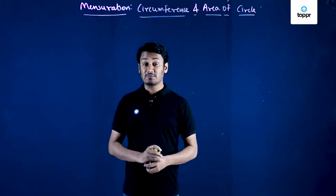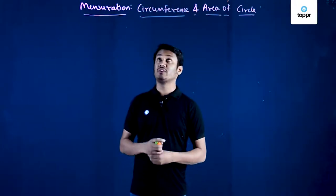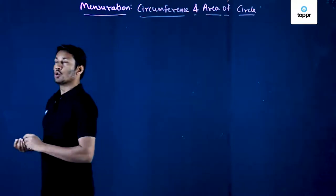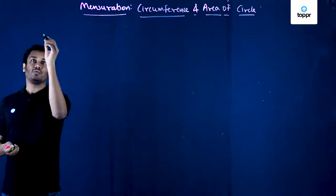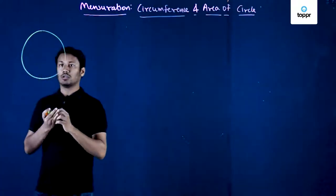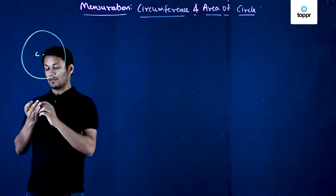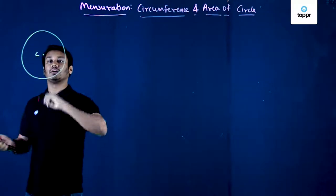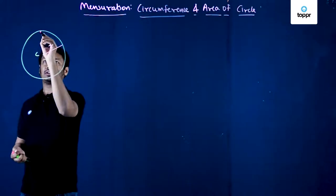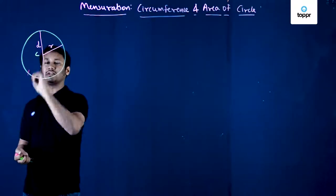Hello students. In this video lecture of chapter mensuration, we will talk about circumference and area of circle. We will first consider a circle with center C, radius R, and diameter D.